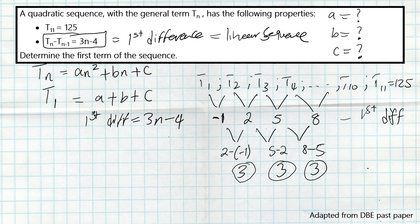Once we have this, we can use the same approach as finding the general formula for a quadratic sequence to determine a, b, and c. That was the tricky part — it's not far from finding the equation of a quadratic sequence, except we aren't given the actual terms; we get the second difference and only one term.